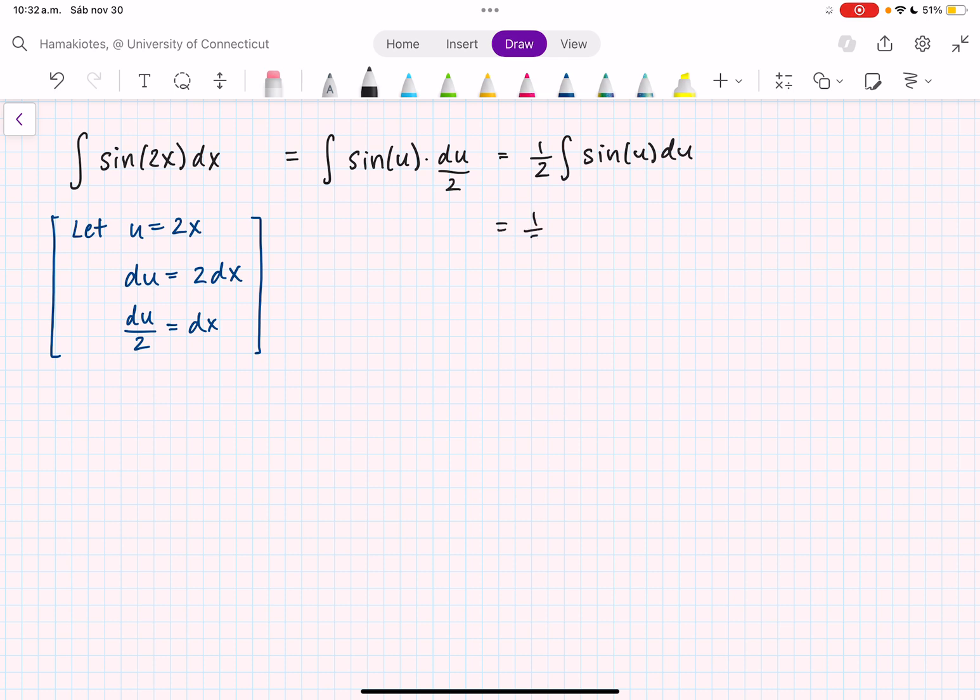That's just going to be 1/2 times (-cos(u) + c). Multiplying by 1/2, I have -cos(u)/2 + c.